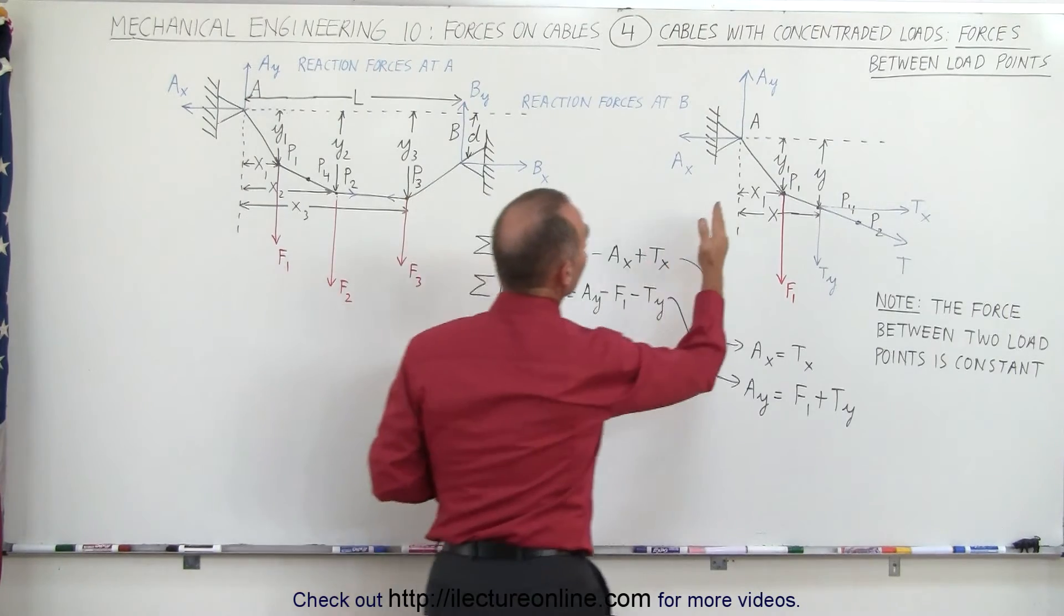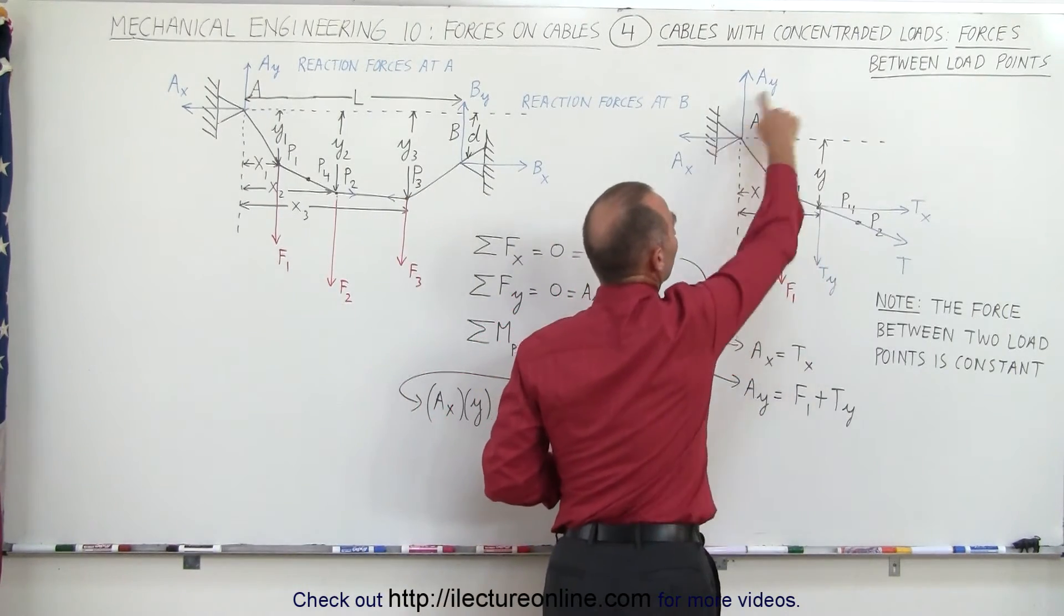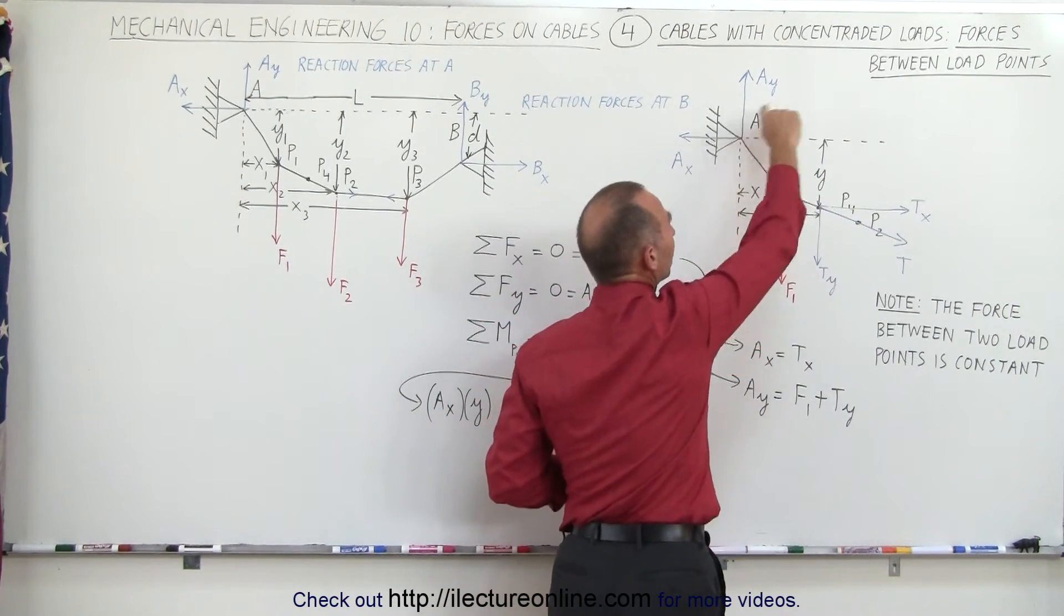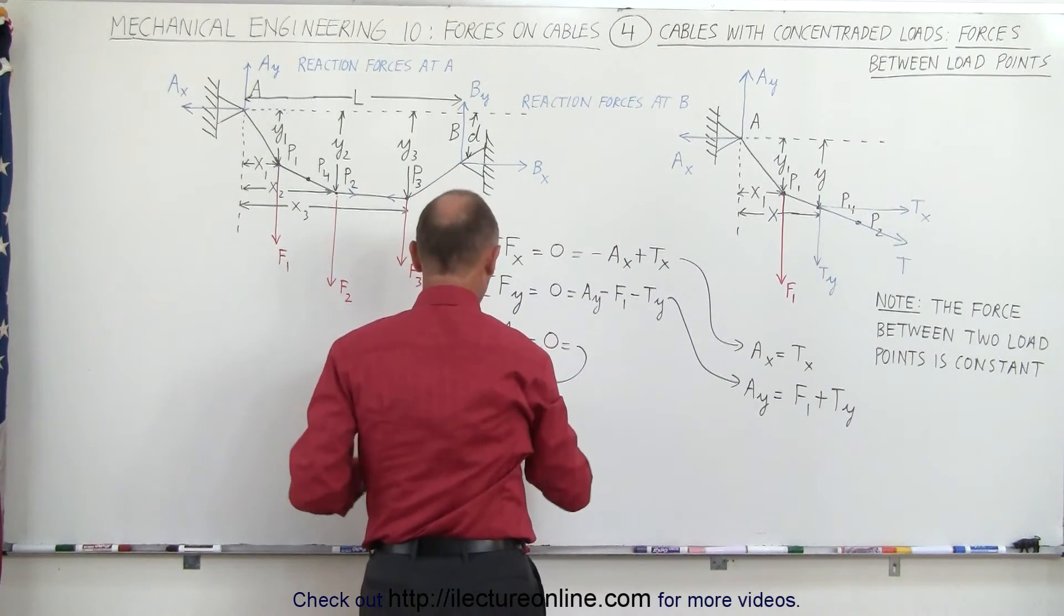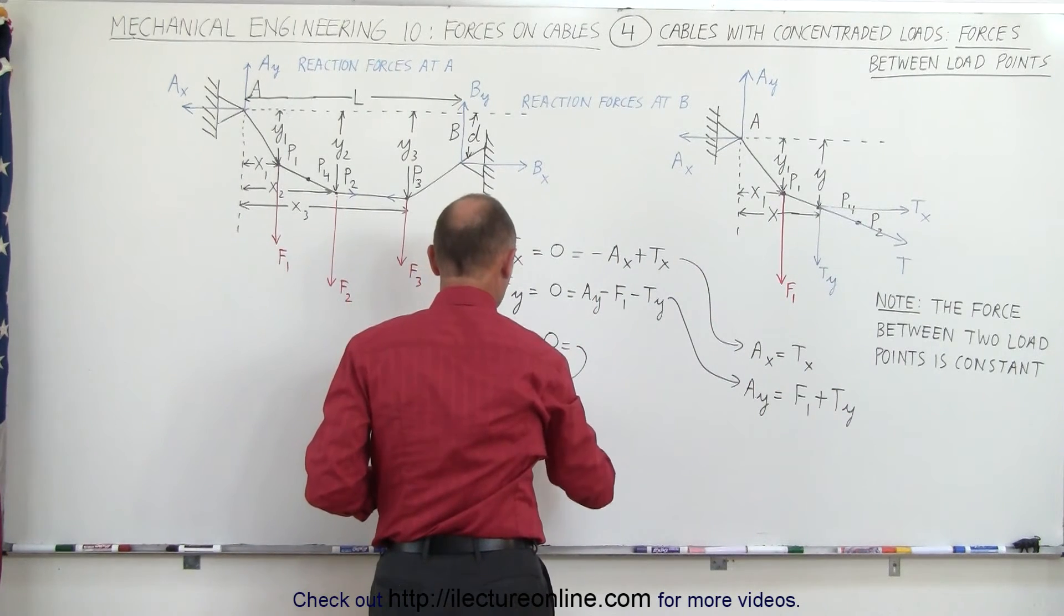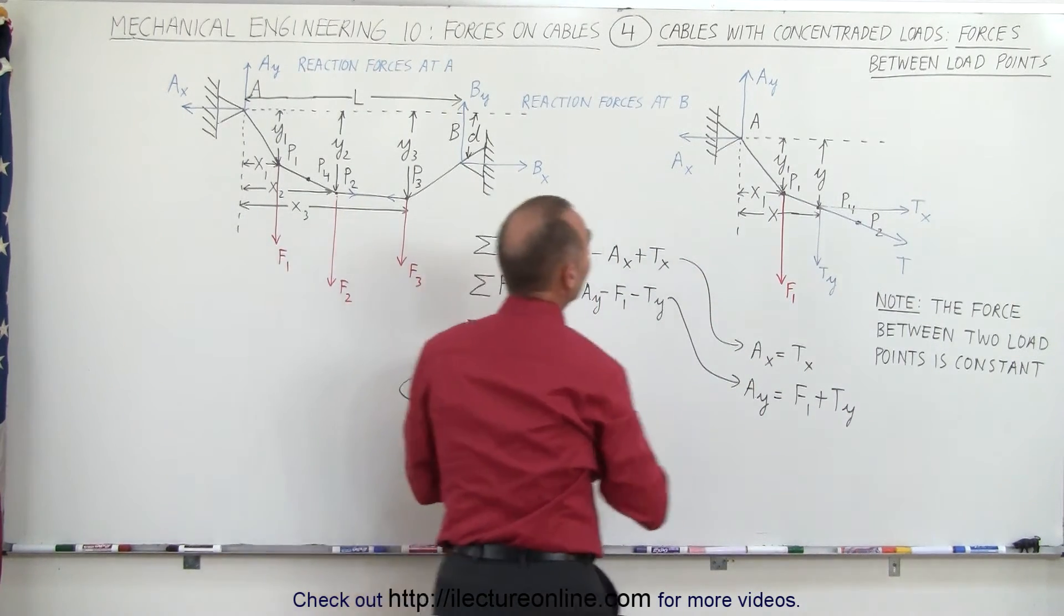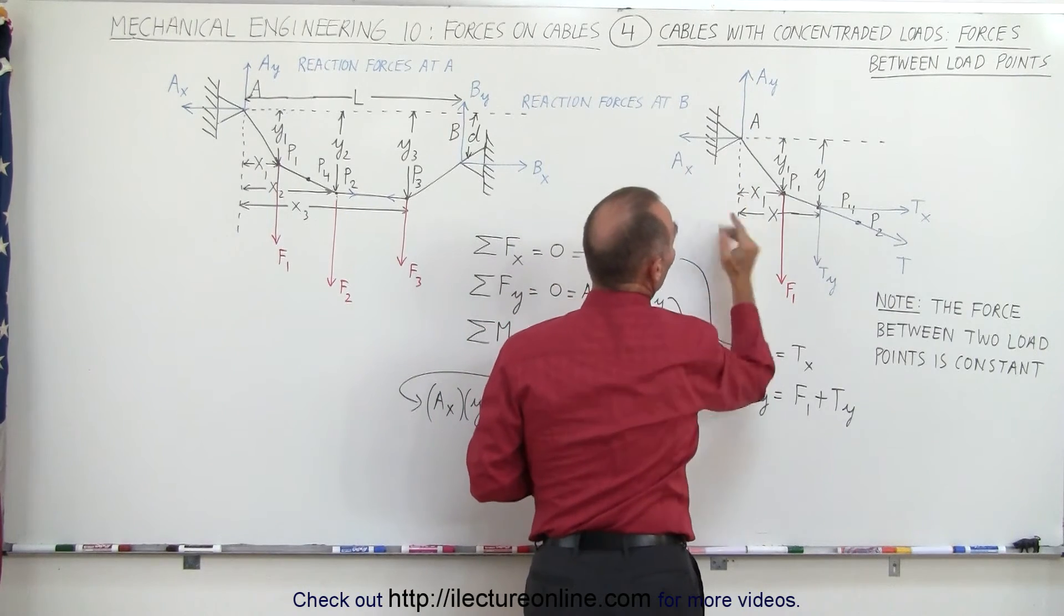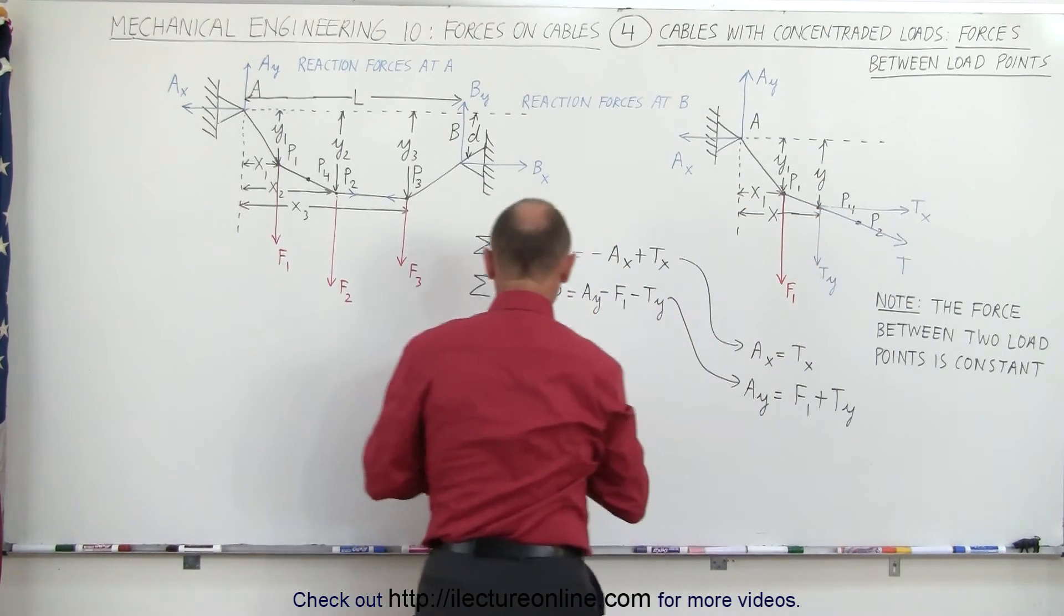Let's consider A sub y. That will cause it to have a negative moment because it's a clockwise direction. That becomes minus A sub y. And the distance from the line of action of that force to the pivot point would be the distance x right here.